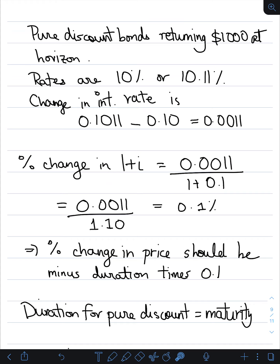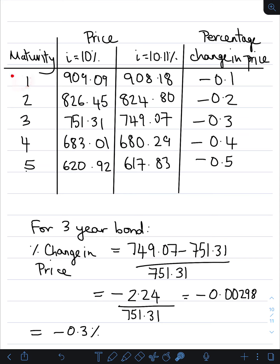Let's check if that actually holds. Remember, the duration for a pure discount bond equals its maturity. So the duration of the one-year bond is 1, the five-year bond is 5, and so on. We're expecting the percentage change in price to be minus 0.1% times the duration — for instance, minus 0.1 times 5 equals minus 0.5% for the five-year bond, and minus 0.1 times 2 equals minus 0.2% for the two-year bond.